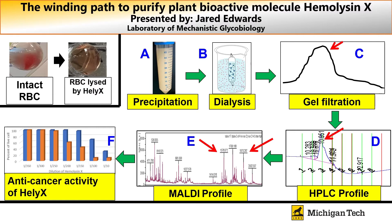What is hemolysis? What is a plant bioactive molecule? These things can vary depending on the research and the lab you're working in, but for us this is really talking about things that can have activity towards mammalian red blood cells. We can see in the upper left-hand corner of the slide what intact red blood cells look like, and then what happens when we expose them to hemolysin or helix — these cells are lysed, they're ruptured, their cell membranes are disrupted and the contents are released.